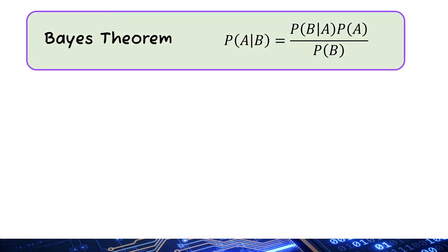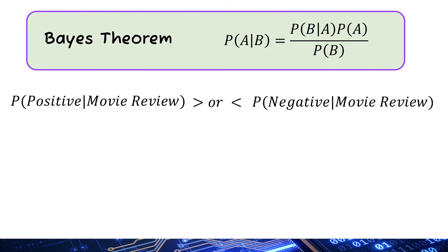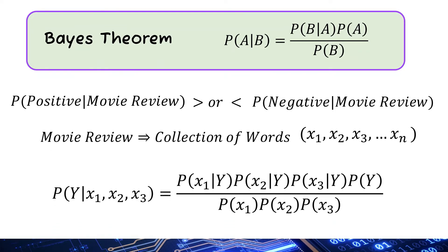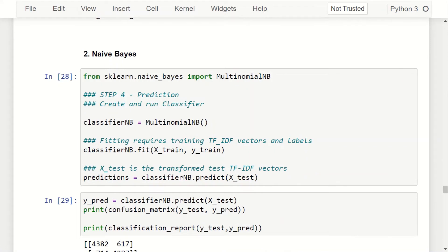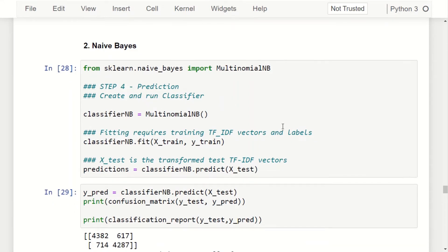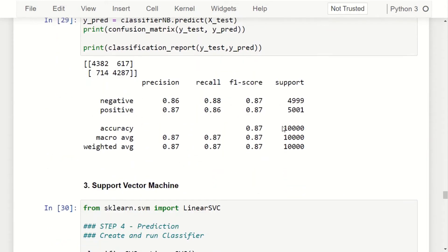The third algorithm is Naive Bayes, based on Bayes' theorem of conditional probability. We find the conditional probability of positive sentiment given a particular review, and the conditional probability of negative sentiment for the same review — the greater one is the predicted sentiment. Bayes' theorem breaks down the conditional probability of a new review into the probabilities of its constituent words, obtained from training data. The Python code follows the same sklearn pattern, and Naive Bayes scores around 87% for all measures.